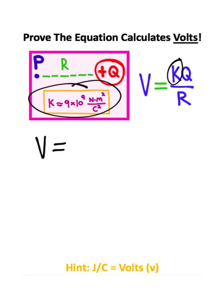K is the constant given in this diagram. The units are newtons times meters squared divided by coulomb squared.